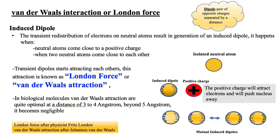Let's start with Van der Waals interaction, or London force. What do you mean by a dipole? Just recall your basic chemistry. A dipole is a pair of opposite charges that are separated by a distance. For instance, if we have an atom where one end is positively charged and another is negatively charged, we call it a dipole.